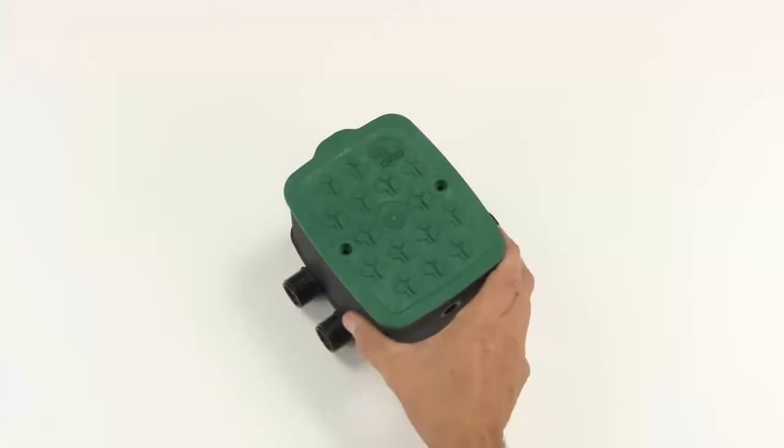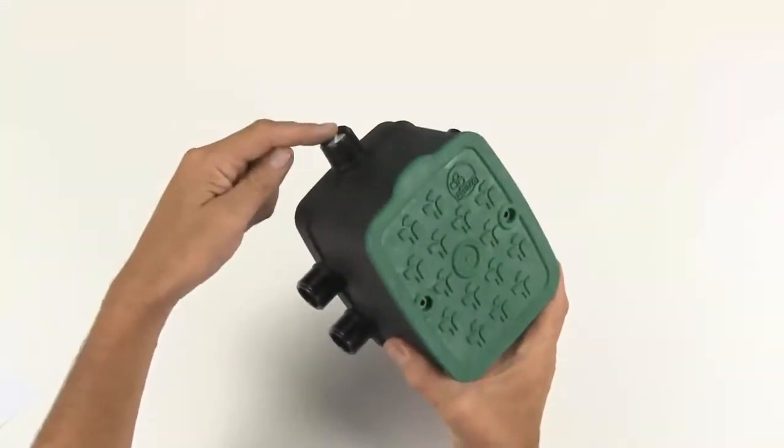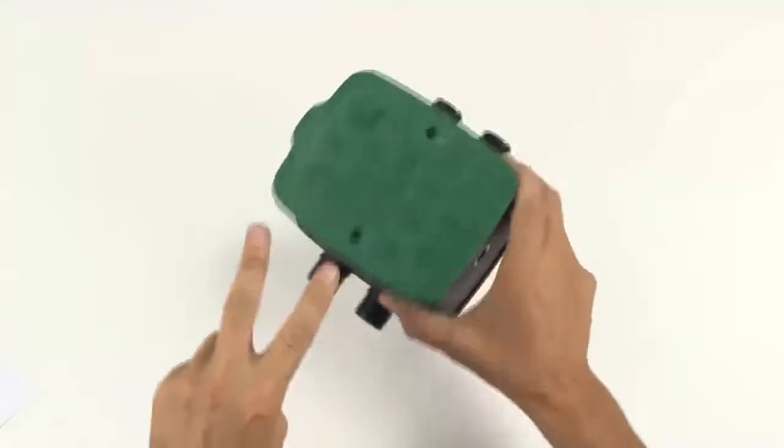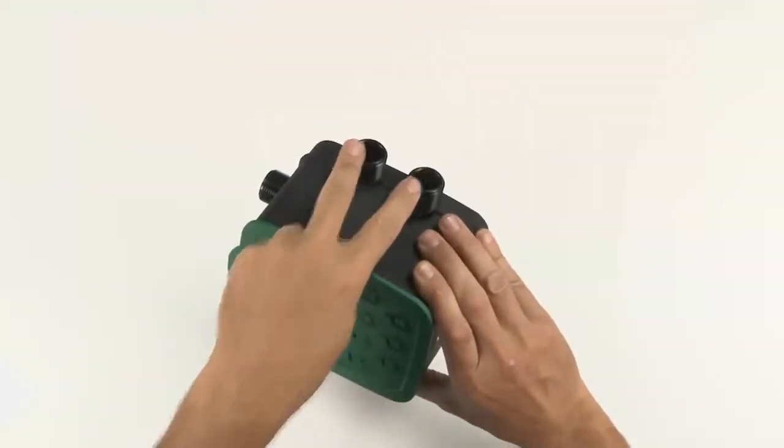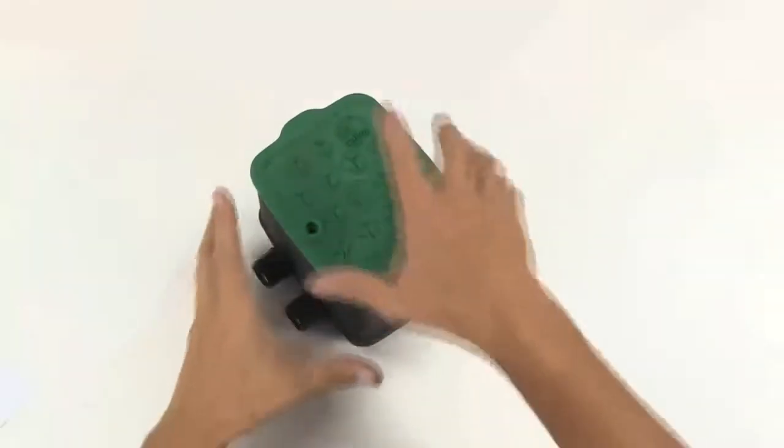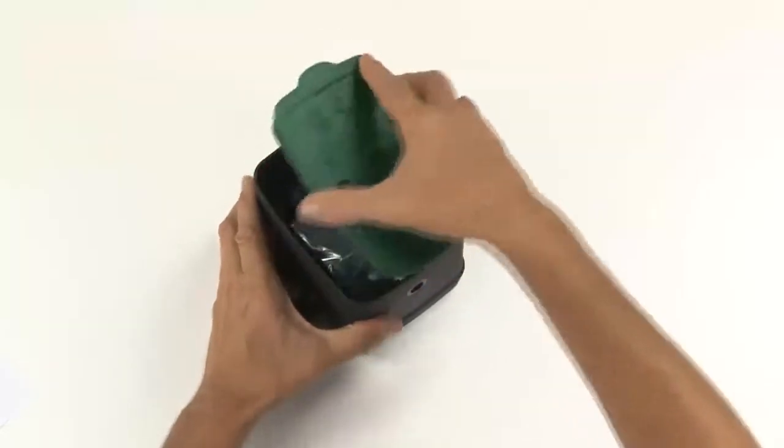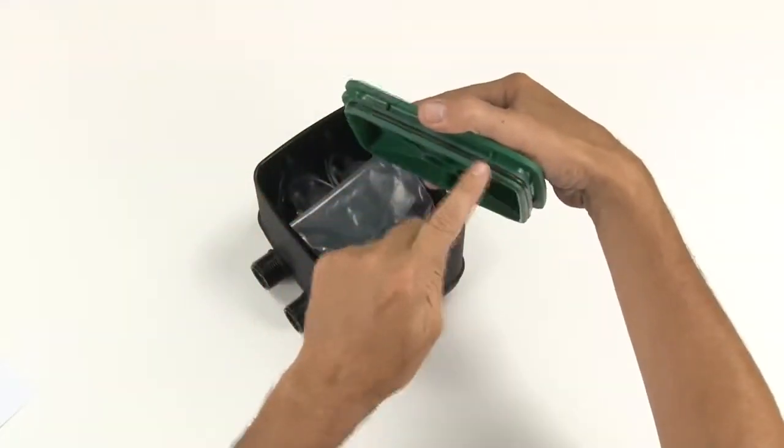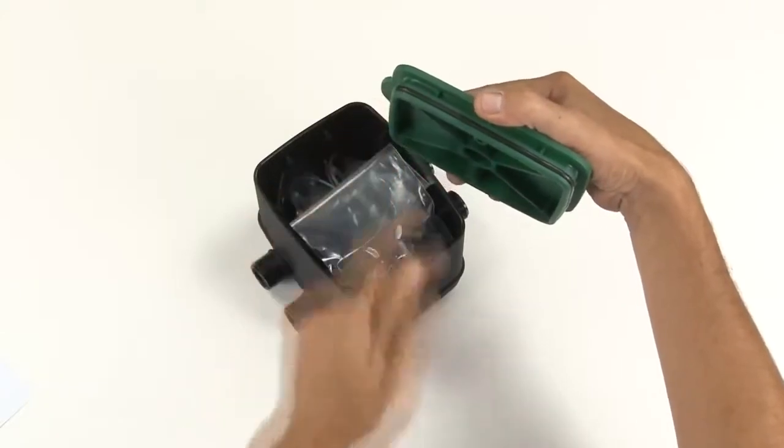This is your EasyValve 4. Here's the inlet for your main water connection, and either side has two outlets for connecting your irrigation hoses. As you take off the lid, you'll see the O-ring that seals the product and keeps out dust, water, and insects.